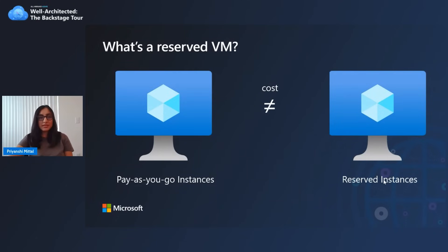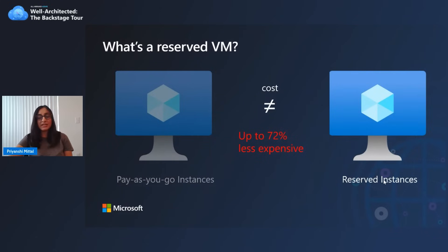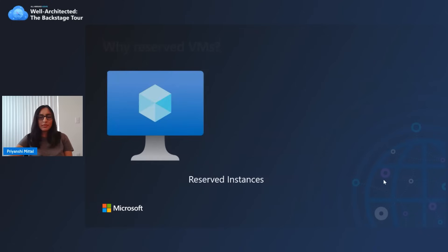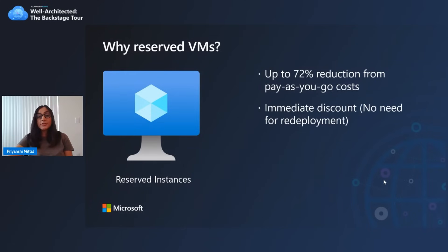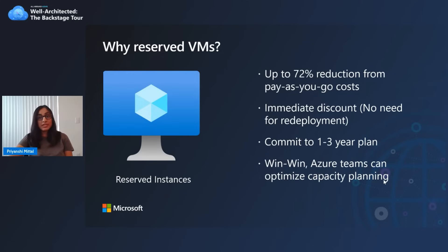Why would you buy reserved instances? They save up to 72% on your pay-as-you-go costs. After you purchase a reserved instance, you don't have to redeploy — the discount is automatically applied to matching resources. You can commit to one-year or three-year plans wherever available. It's also an advantage for Azure teams so they can optimize capacity planning for VM instances effectively.